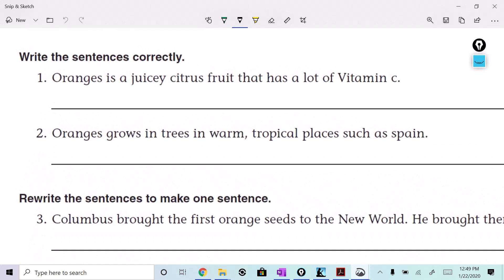What do we got? Oranges are a juicy citrus or juicy citrus fruit that has a lot of vitamin C. We've got a spelling error here. Somebody got it? Go. Spell it. J-O-I-C-Y. We just got to get rid of that E. See that?